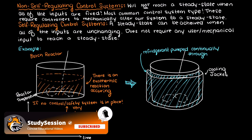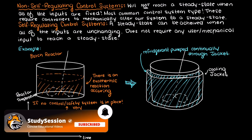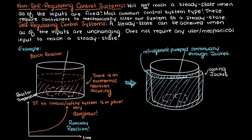Unlike self-regulating control systems, non-self-regulating control systems do have the potential for failure. In our previous example, what do you think would happen if our refrigerant pump failed? Well, then we couldn't control the temperature of our reactor anymore and we would have a runaway reaction.